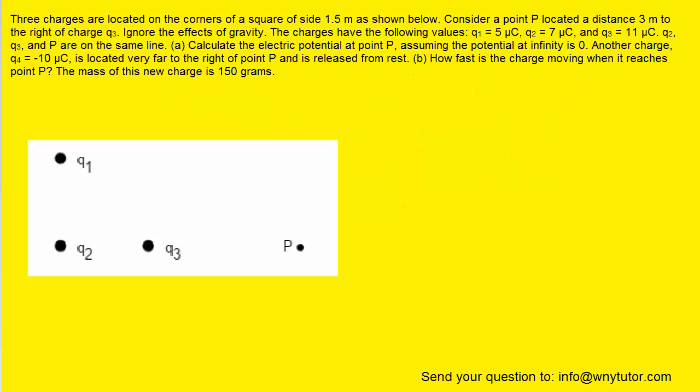If you haven't done so yet, please pause the video and try to solve the question on your own before listening on. In part A, we are being asked to calculate the electric potential at point P, assuming that the potential at infinity is zero.